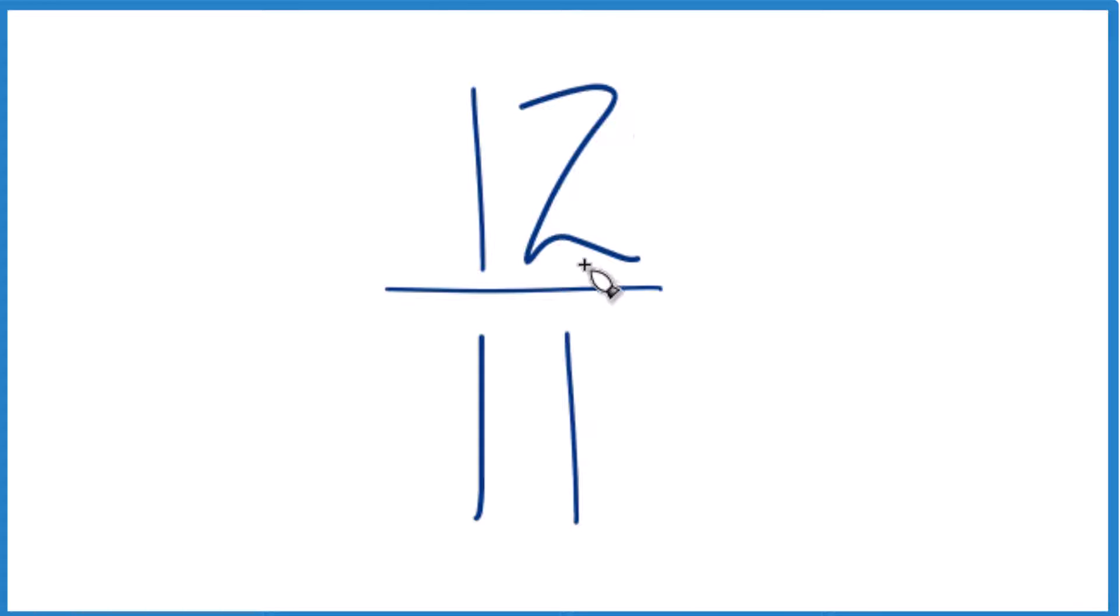So at this point, the only number that's going to go into 12 and 11 evenly is 1, and that means it's already simplified. We can't reduce this any further, but we can write 12 elevenths as a mixed number, and here's how we do that.